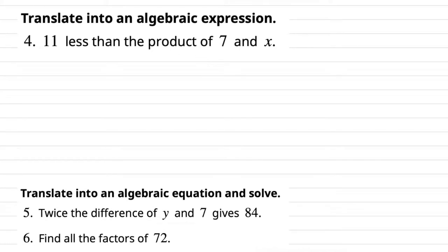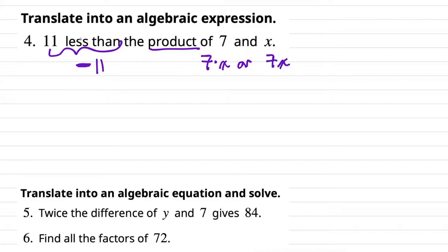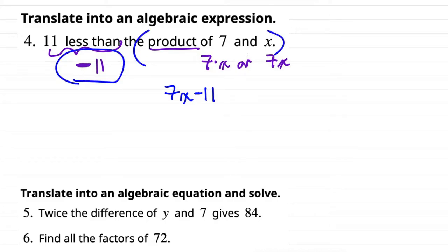Number four: translate into an algebraic equation. "11 less than" — that means we're going to subtract 11. "The product of 7 and x" — product means multiplication, so 7 and x is 7x. "11 less than that" would be 7x minus 11. You might wonder why 11 is at the end of the expression — "11 less than" means we're subtracting 11 from the product of 7 and x. So the answer is 7x minus 11.